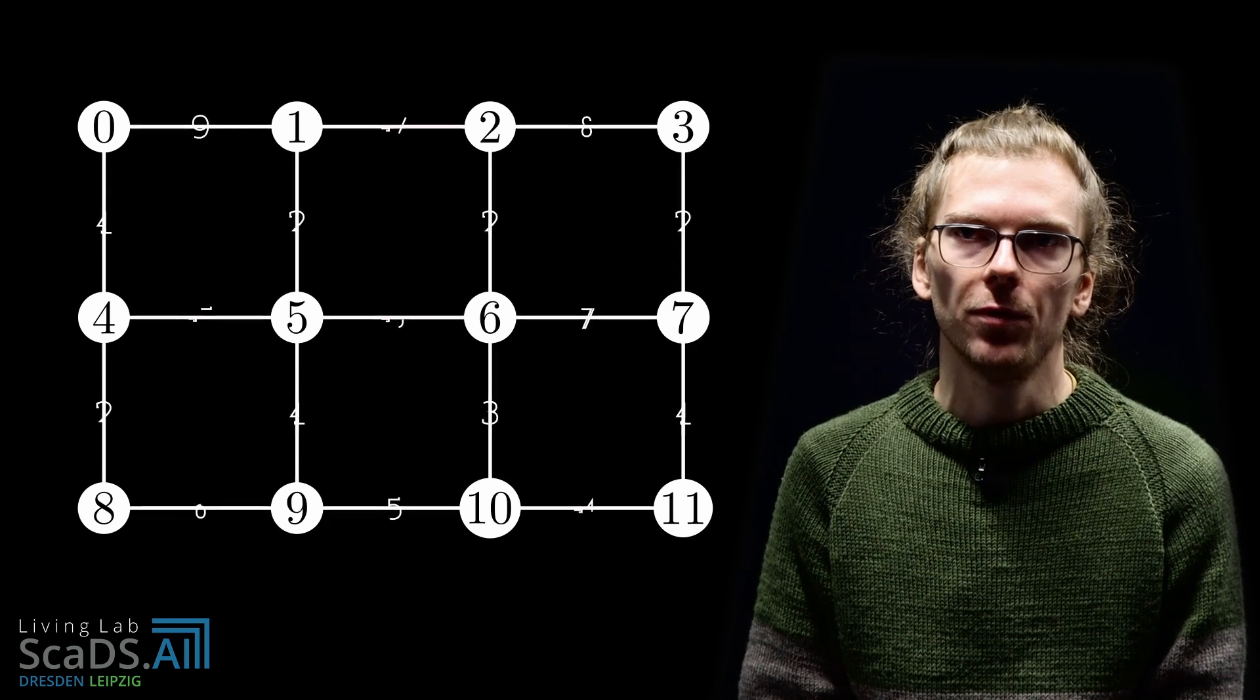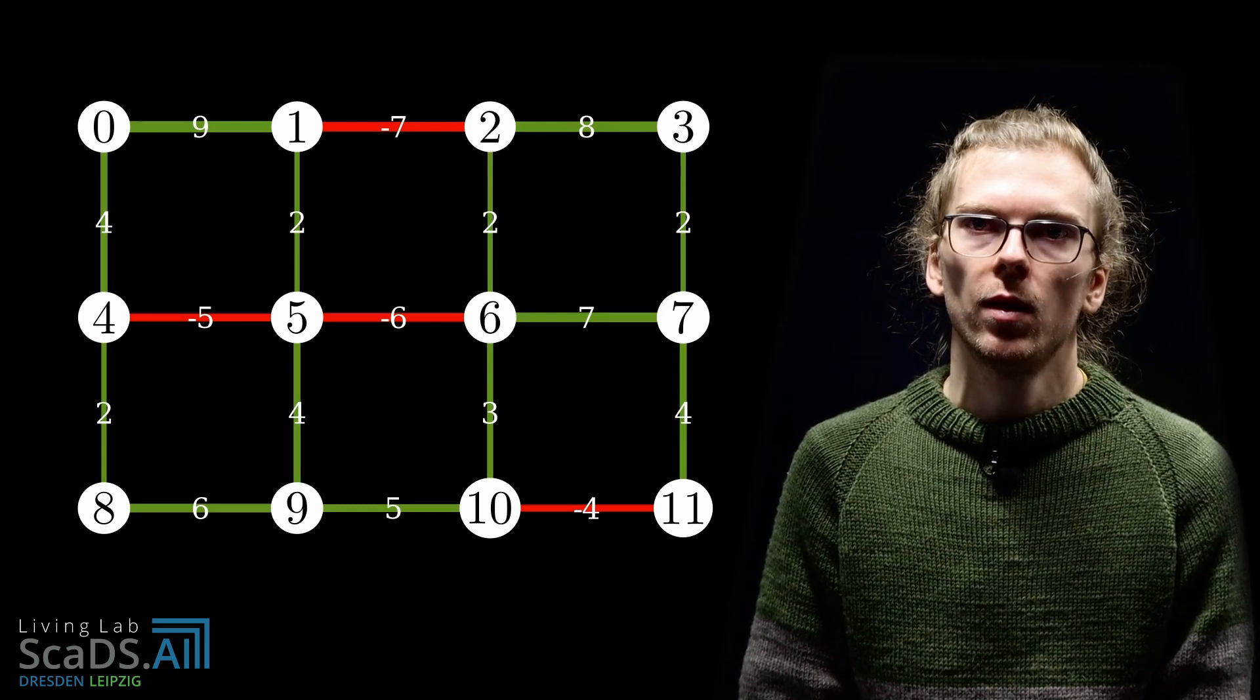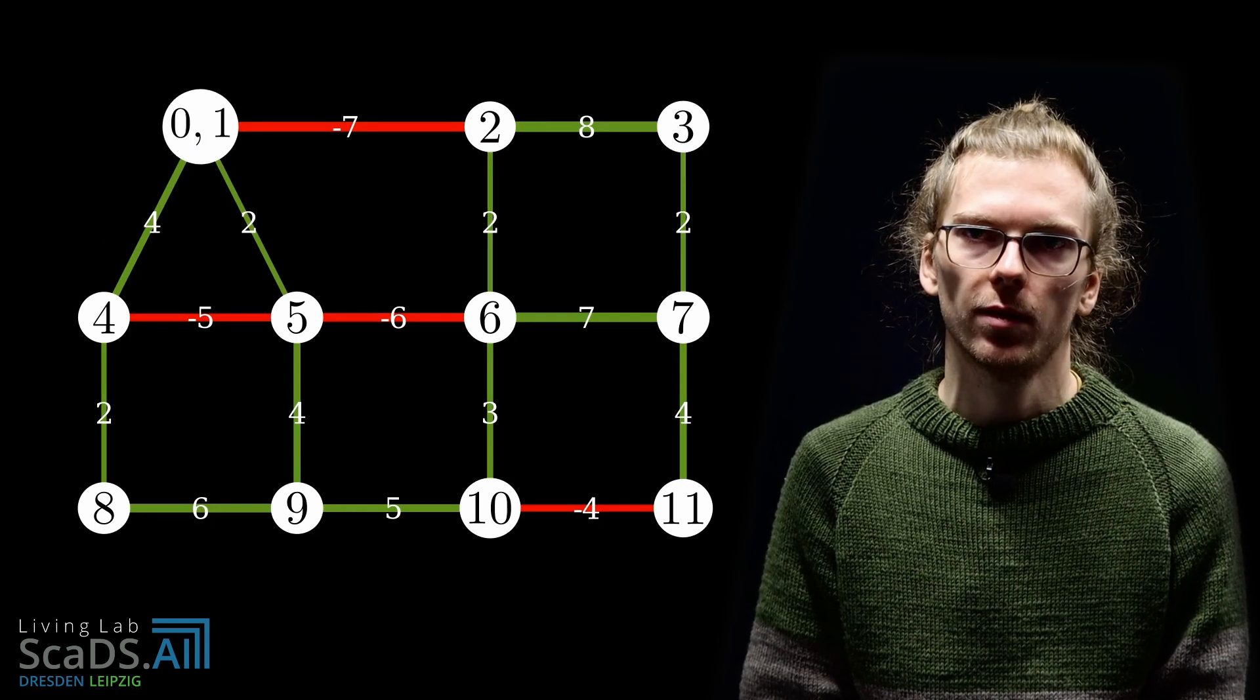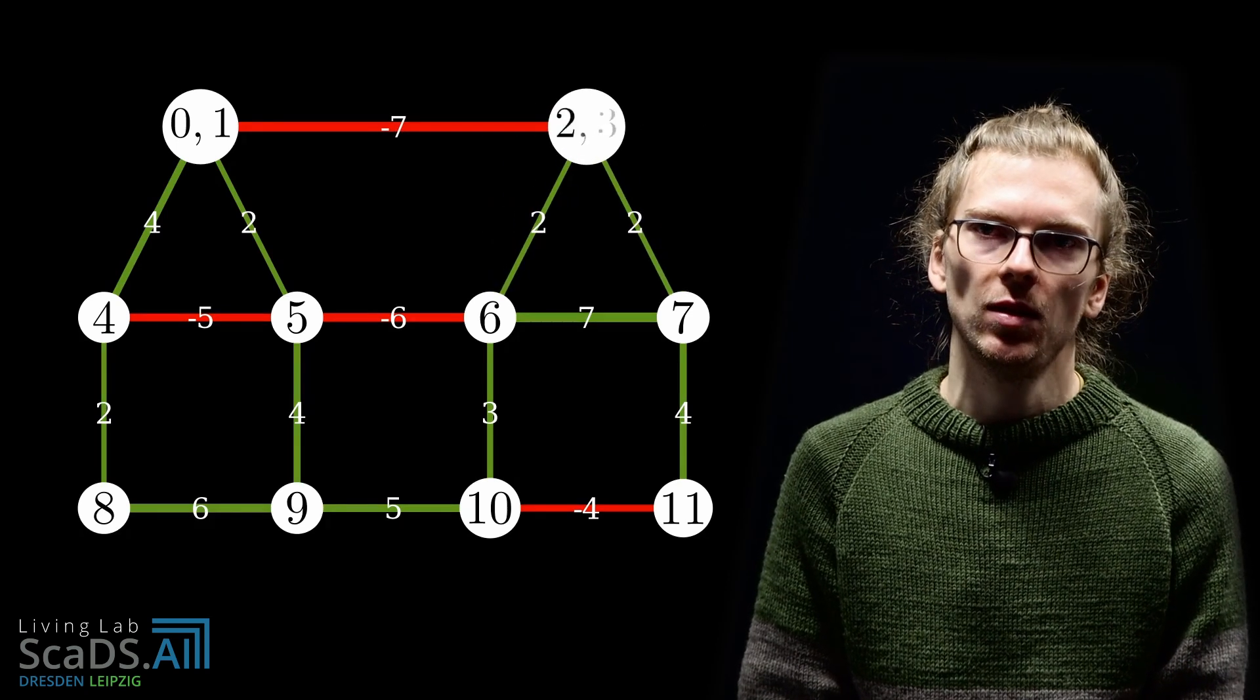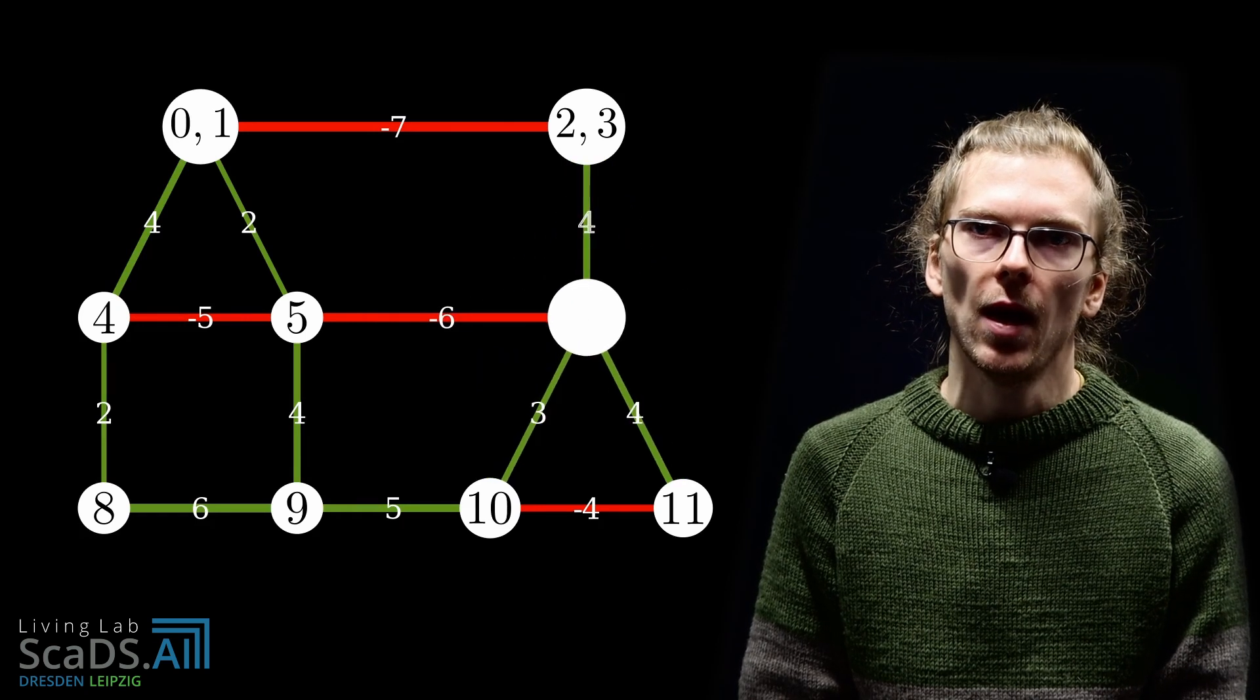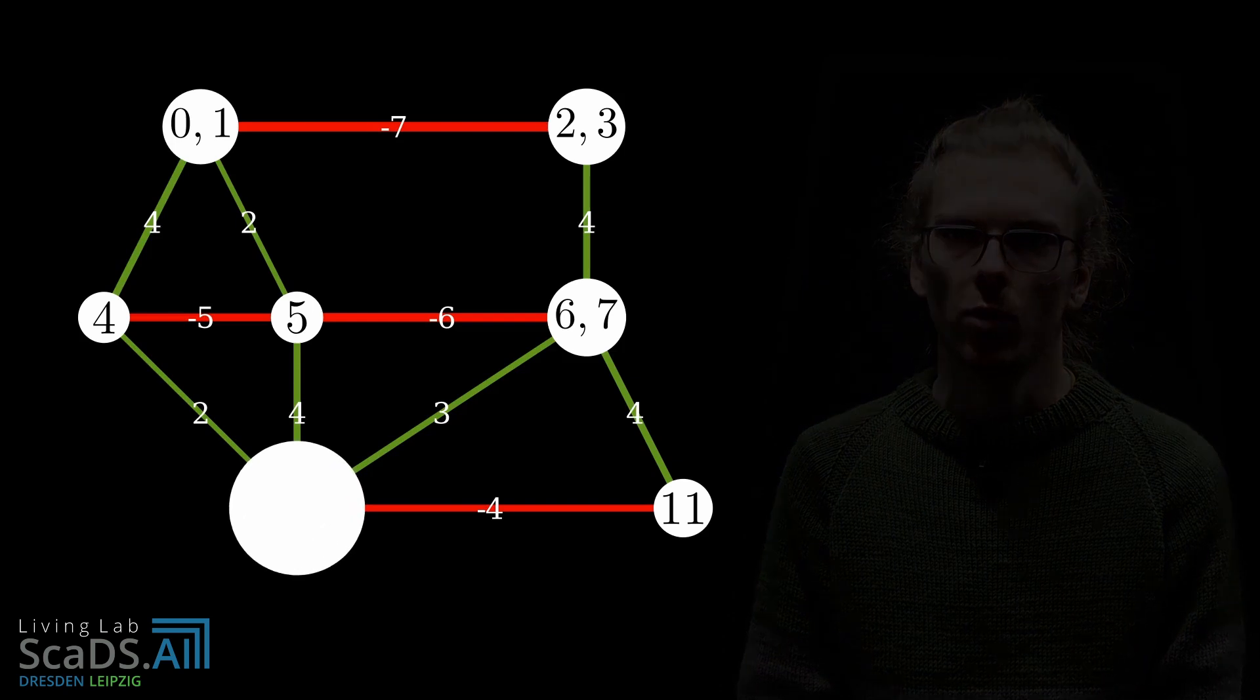Let's consider the same example as before. The greedy algorithm picks the edge with the largest positive cost and contracts this edge. Here, the edge connecting the vertices 0 and 1 has the largest cost of 9 and is contracted. Next, the edge from 2 to 3 is contracted. Now, the edge from 6 to 7 is contracted. During this contraction, the two edges that connect 6 and 7 to the component containing 2 and 3 are added together and create a new edge with cost 4. The algorithm continues until there is no edge with positive cost left.